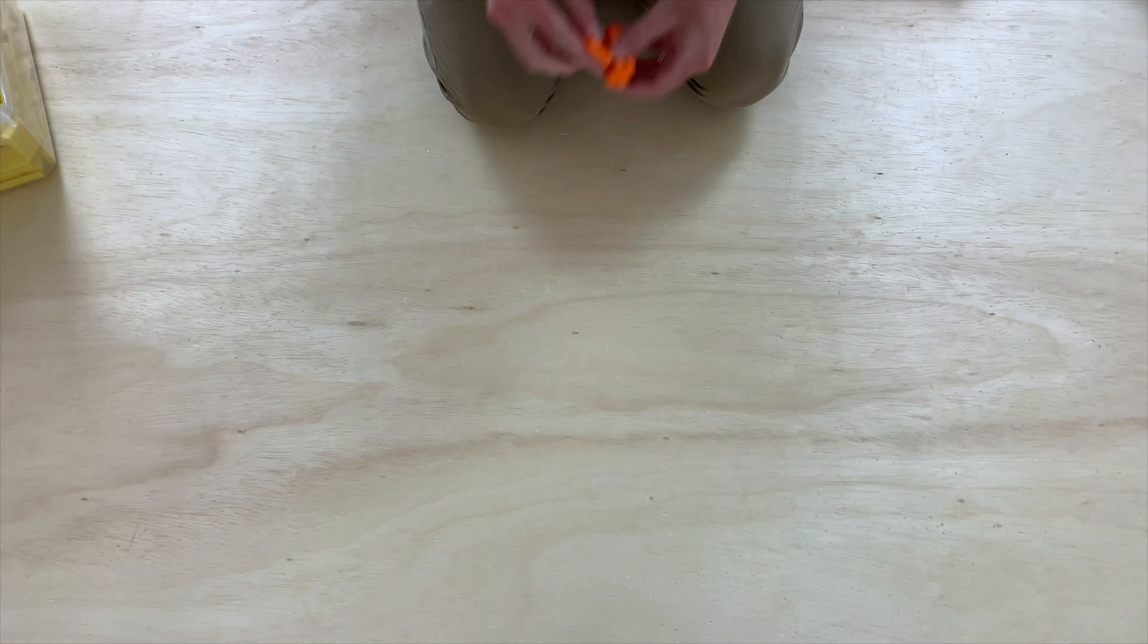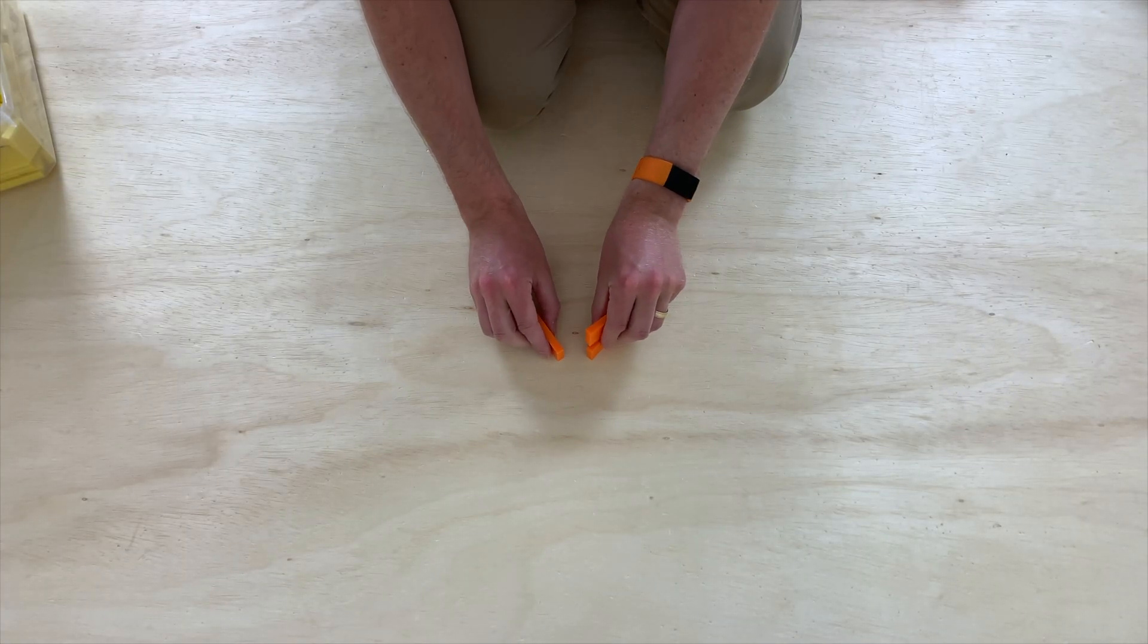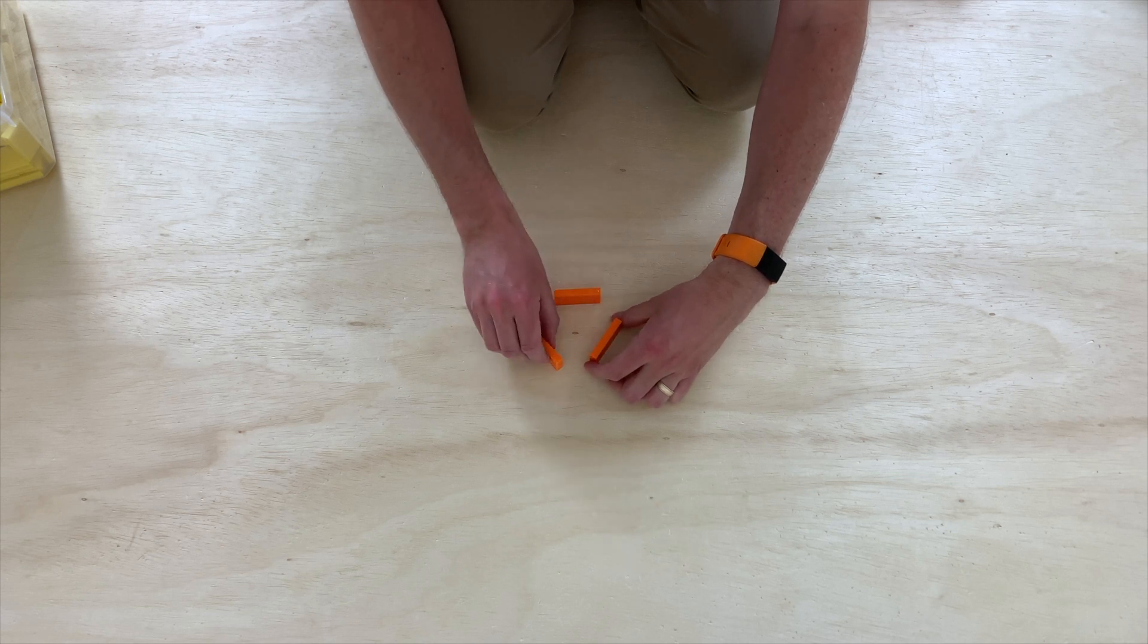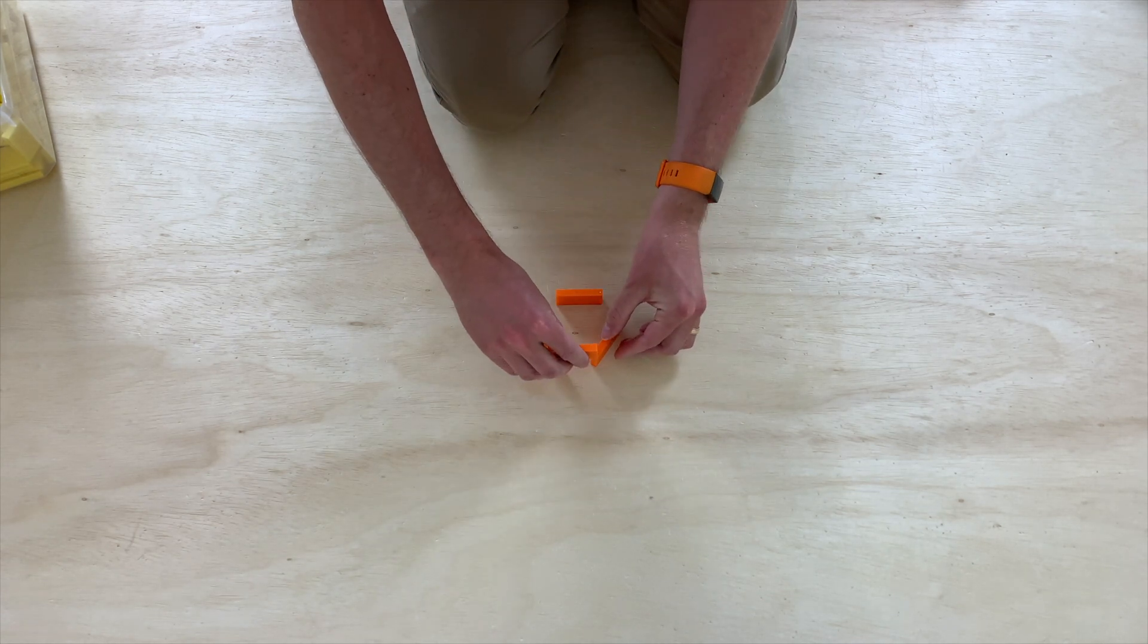The way that we start out is by making a hexagon like this, so sit down three dominoes, and then you'll connect these with another three to make a six-sided polygon.